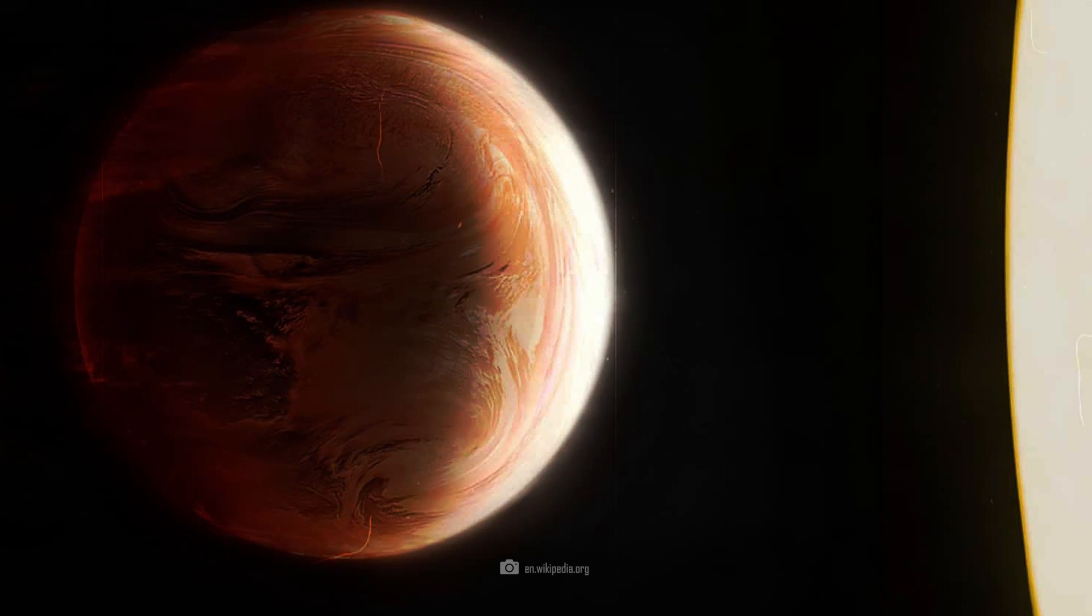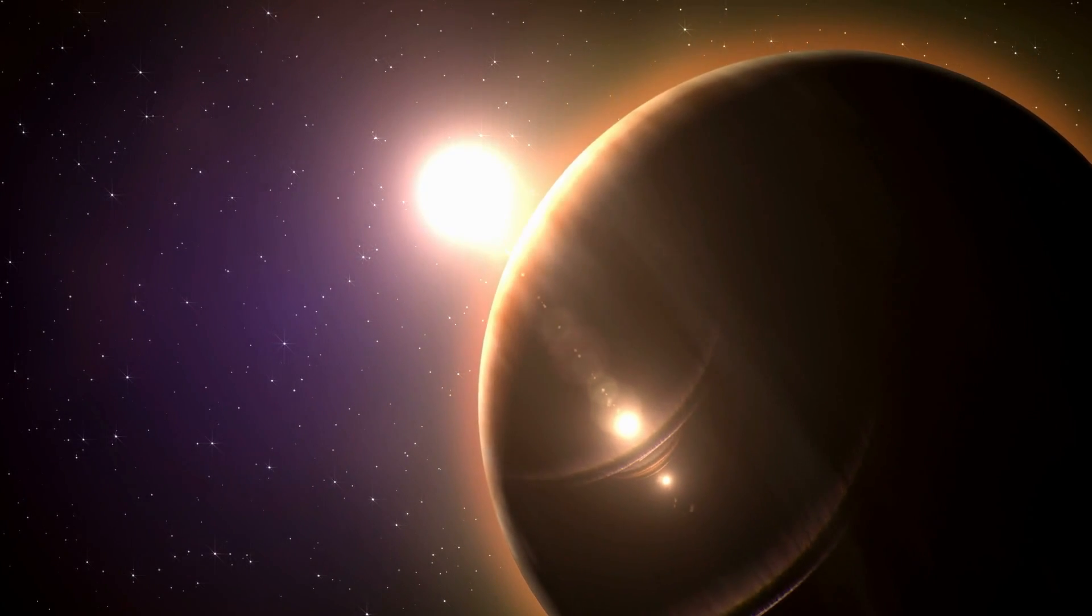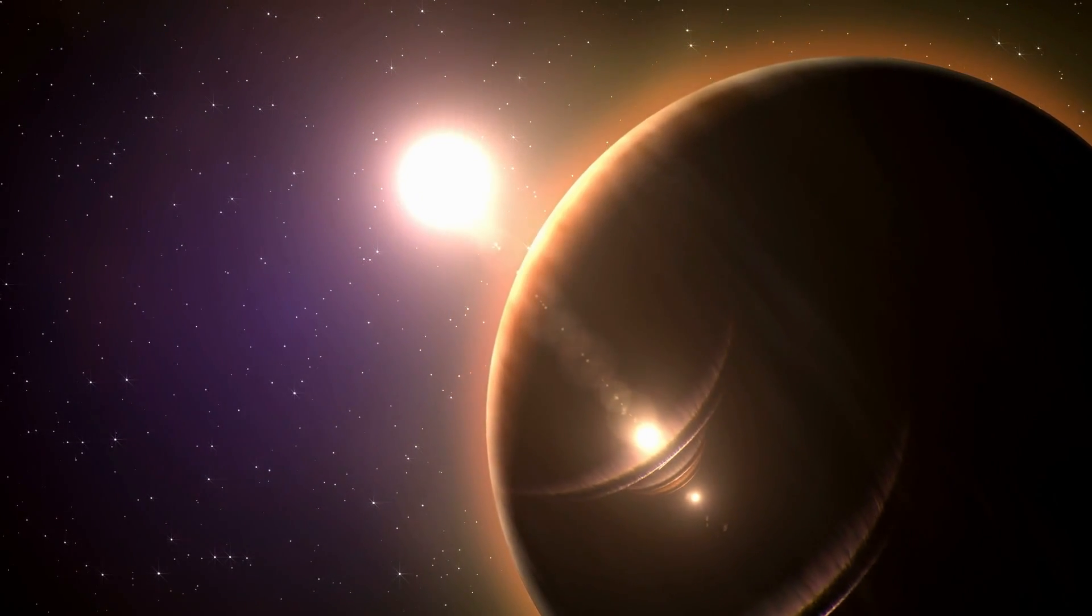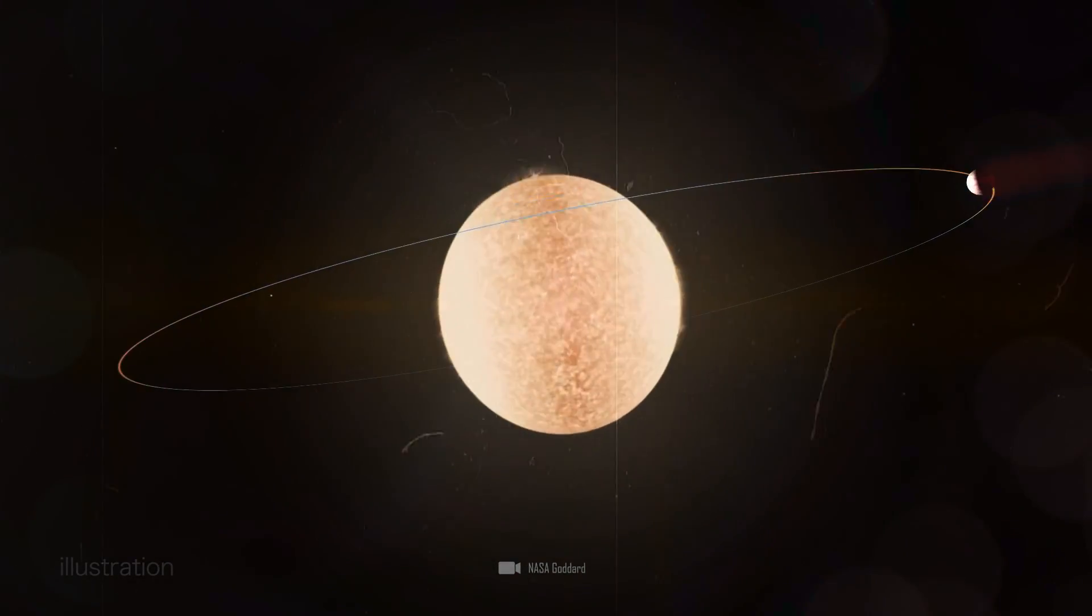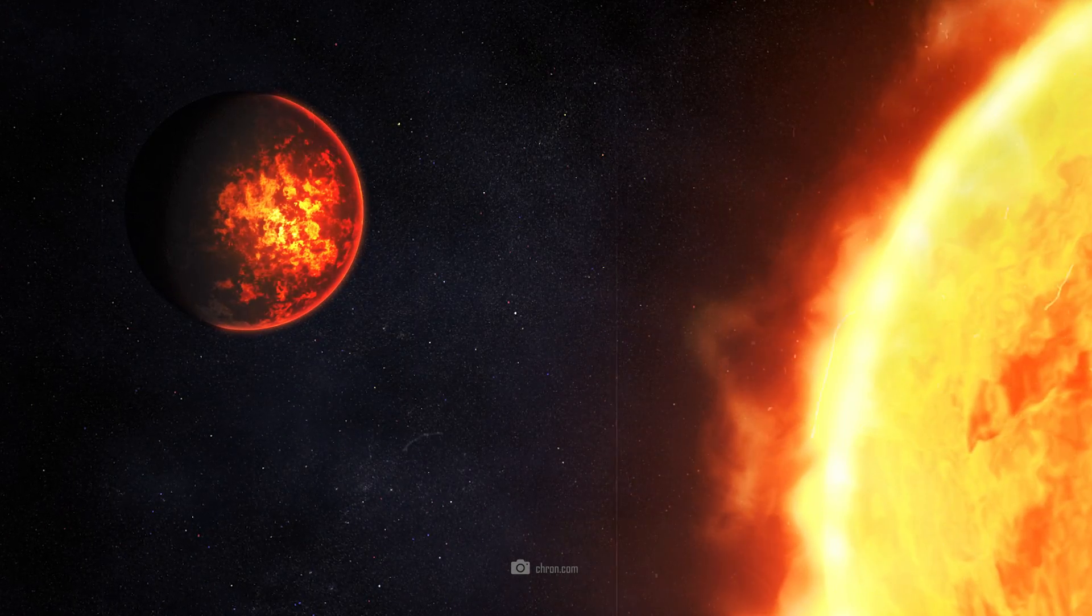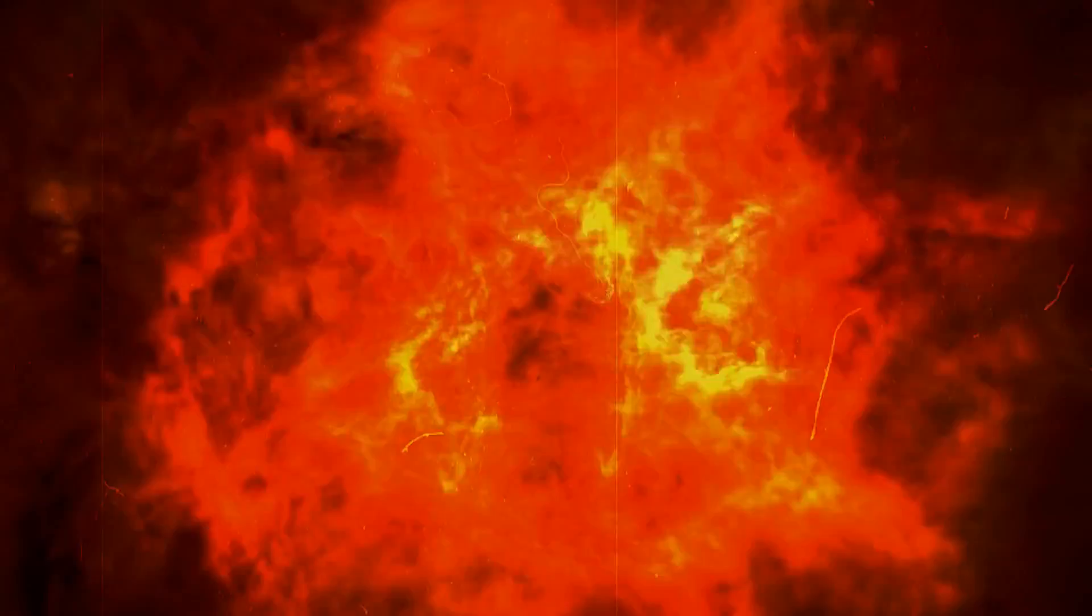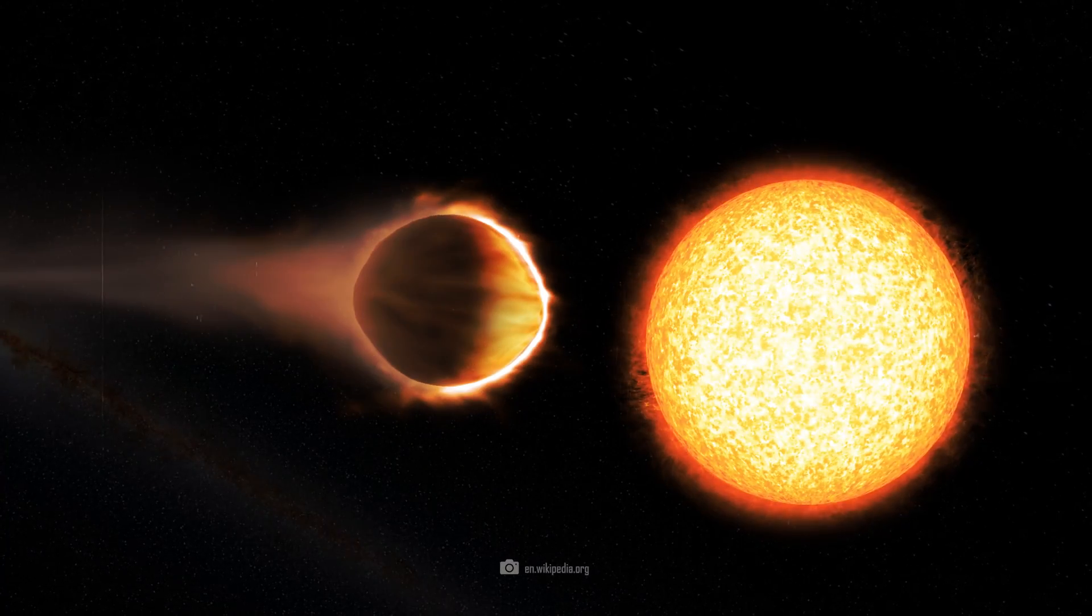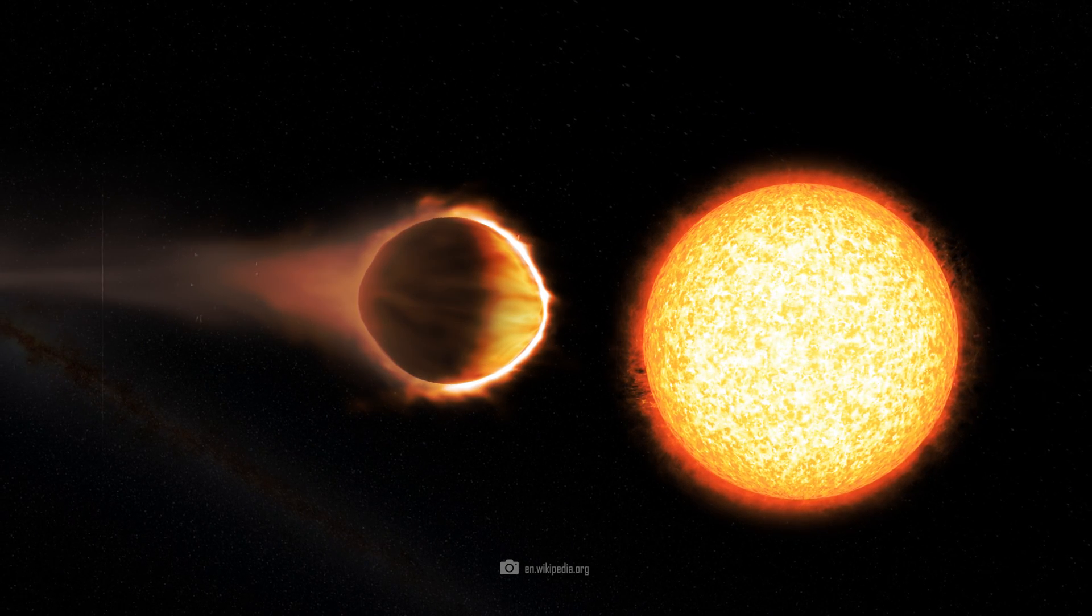WASP-76b is an exoplanet that is about 640 light-years away from Earth and is classified as an ultra-hot Jupiter. The special feature of this exoplanet is that it is so close to its star that it completes an orbit in only about 1.8 days, constantly turning the same side towards the star. Due to the so-called bound rotation, the daily temperature constantly reaches over 2400 degrees Celsius. This is hot enough to vaporize metals such as iron.